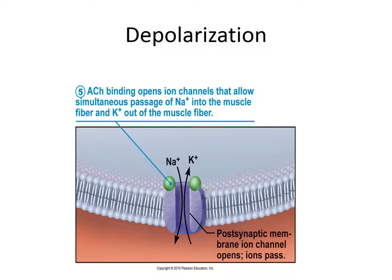In the first step, known as depolarization, the binding of acetylcholine to the sodium ion channels on the motor end plate causes the channels to open. Sodium then rushes rapidly across the sarcolemma into the cytoplasm. As sodium begins to accumulate on the inside of the muscle cell, the resting potential is decreased and localized depolarization occurs — that is, the patch of sarcolemma immediately around the sodium channel becomes more positive inside with respect to the outside.